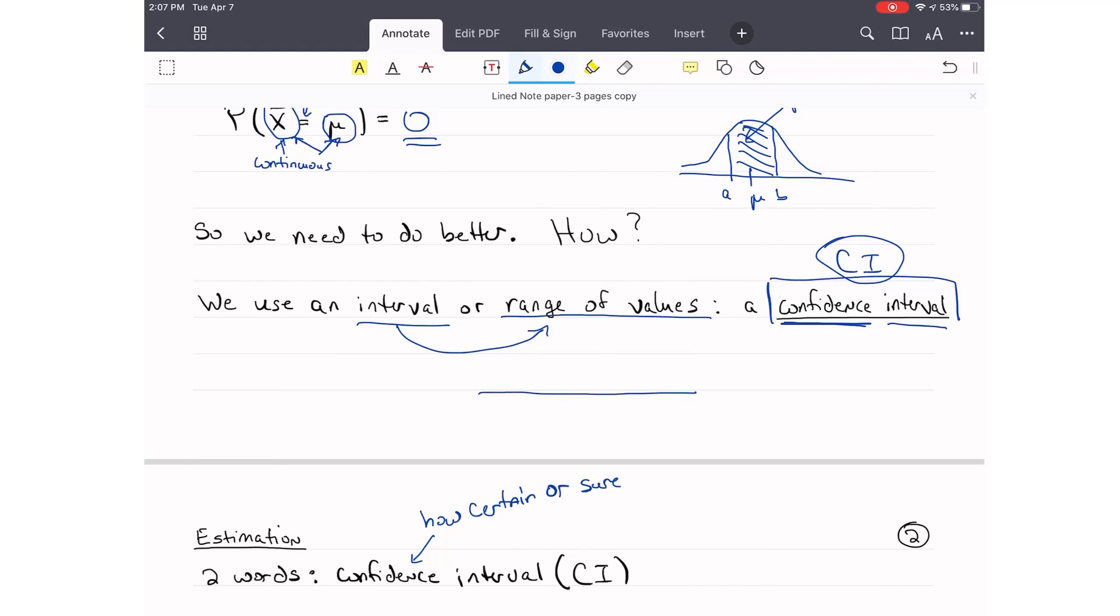It's two words, right? Confidence and interval. Everybody knows what confidence is, how certain or sure we are about something. And I just told you that an interval is a range of values. So if we take a number line, and if this is A and this is B, then this range here of values is an interval.